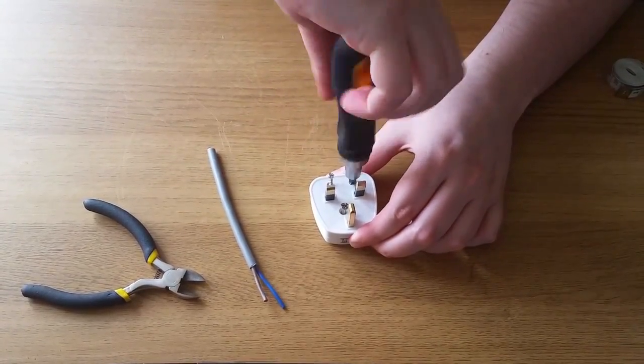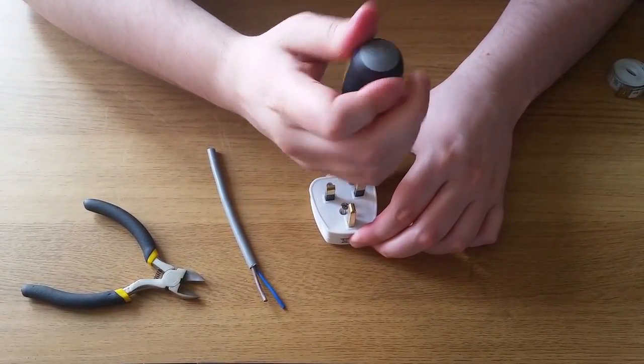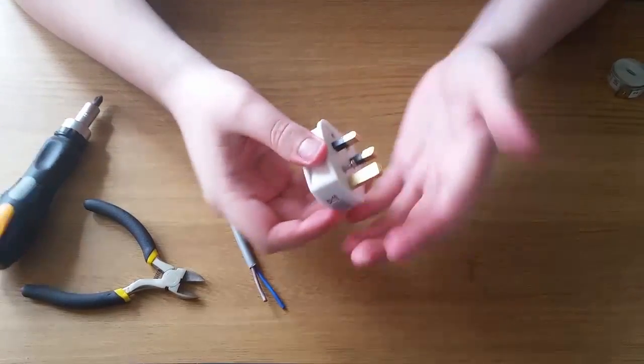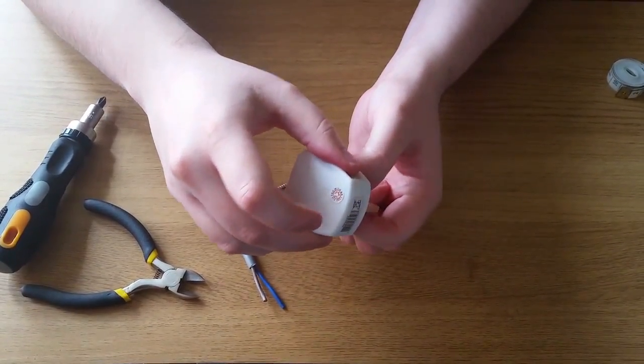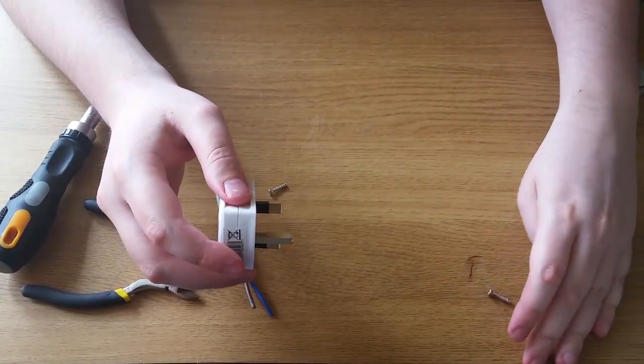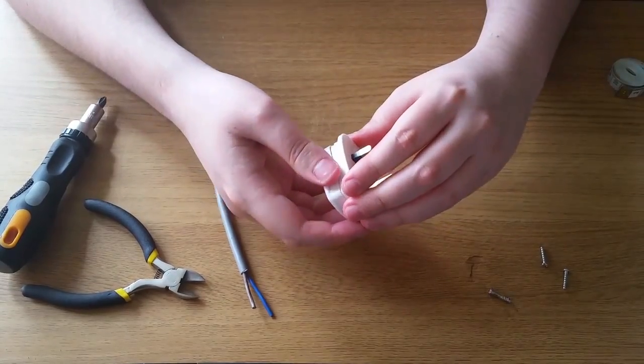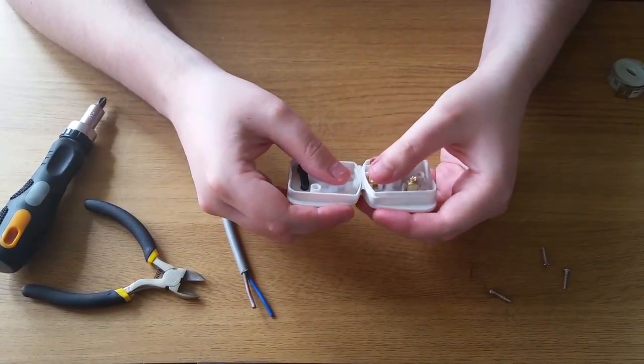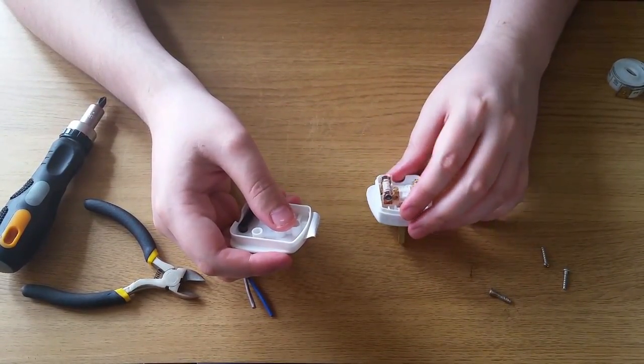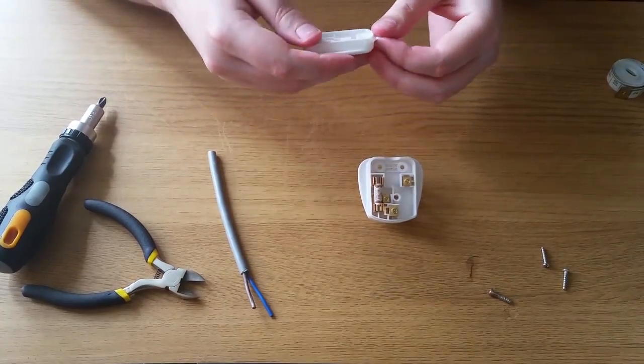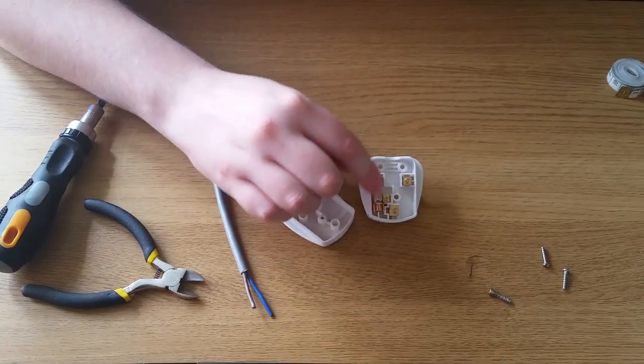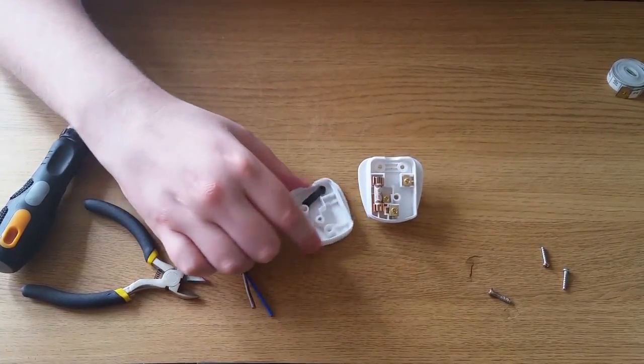So I'm undoing the plug and making sure the lengths are perfect for cutting and stripping back. You should have three screws that need unscrewing. Inside you'll find your three pins. One of the pins is attached to fuse. As you can see there, there's your fuse with the other two pins. Along with the three pins, you should have a cable grip like this to secure the cable in place.